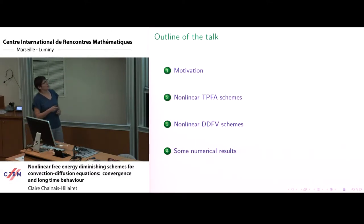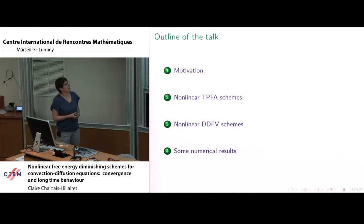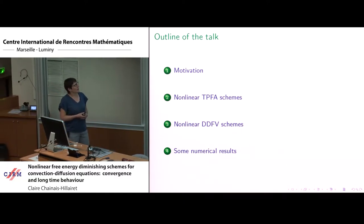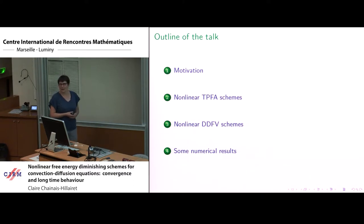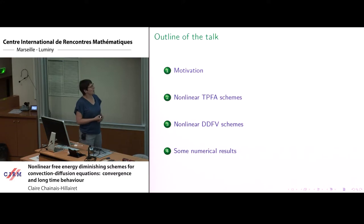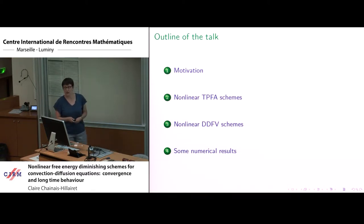This is the outline of my talk. First I want to introduce my motivations to write non-linear schemes for linear equations, and then I will say some words about non-linear two-point flux approximation finite volume schemes. As we are in a polytopal conference, I will say some words about non-linear DDFV schemes that should work on almost general meshes. At the end I will show some numerical results.